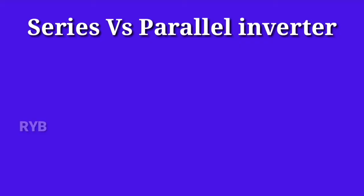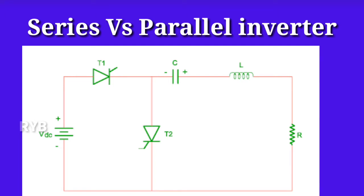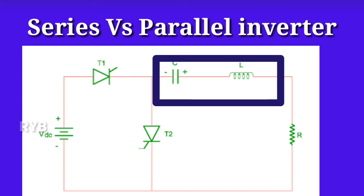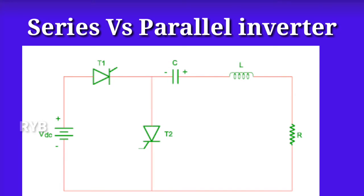The difference between series and parallel inverters: an inverter in which commutating components are permanently connected in series with the load is called a series inverter. Commutating components are used to switch off the thyristors. The series circuit so formed must be underdamped — only an underdamped circuit is used as a commutating element, as the current attains zero value due to the nature of the series circuit. Series inverters are also called self-commutated inverters or load-commutated inverters.